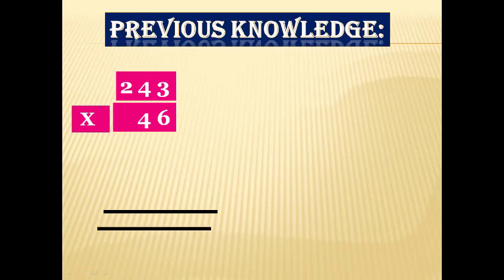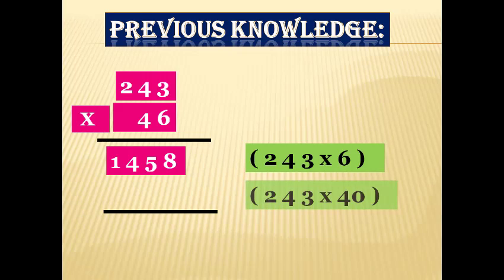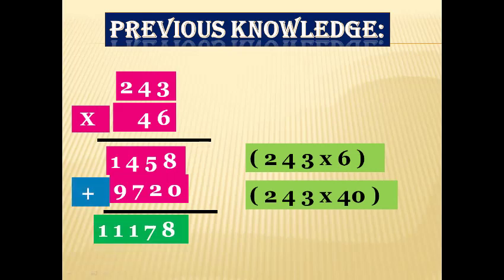In class 3 we learned the multiplication of 3-digit numbers by 2-digit numbers. For example, 243 multiplied by 46. First we multiply 243 by 6 (ones place) and get 1458. Then we multiply 243 by 4 (tens place), so 243 × 40 gives 9720. Adding these, we get 11,178.